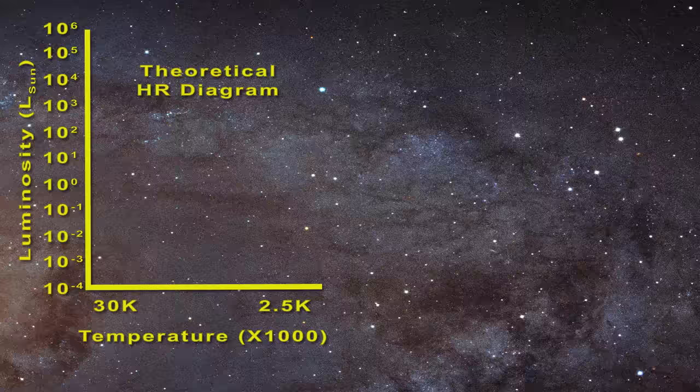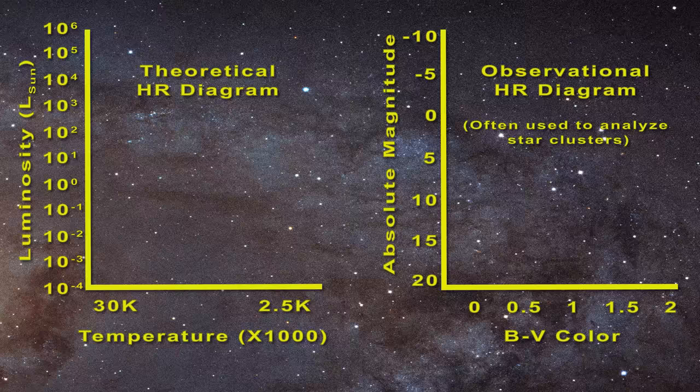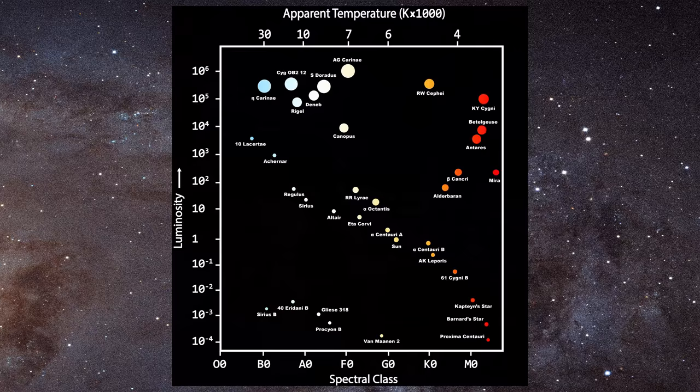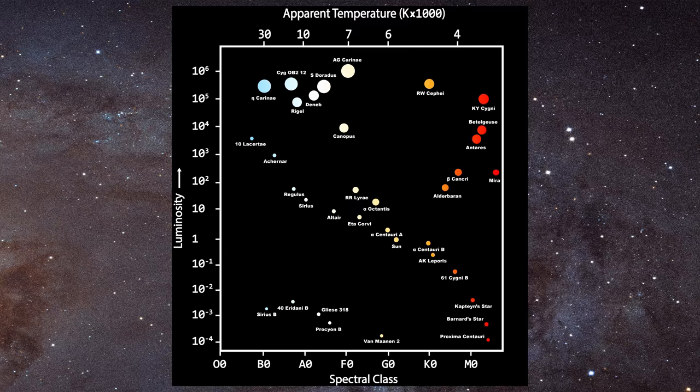The theoretical HR diagram involves a plot of temperature against luminosity, whereas the observational HR diagram constitutes a plot of color versus magnitude. The HR diagram can be presented as you can see here, where luminosity is being related simultaneously to apparent temperature and to spectral class.